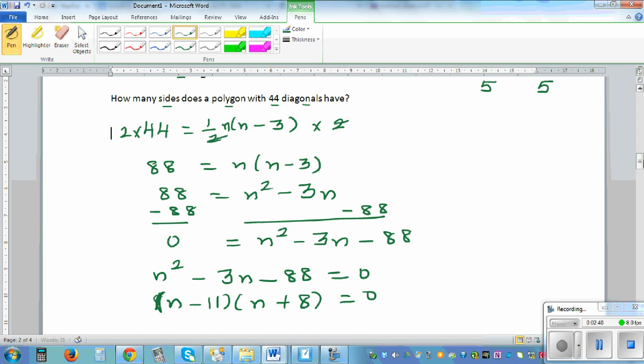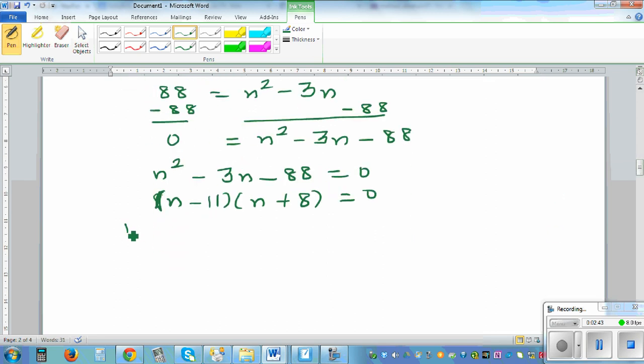If you set each of them equal to 0, I can say n minus 11 equals 0, or n plus 8 equals 0. So n equals 11, or n equals negative 8.